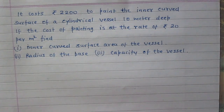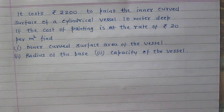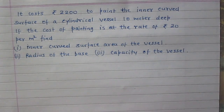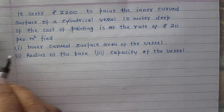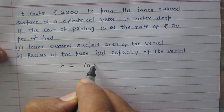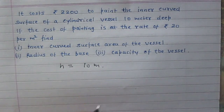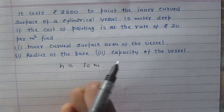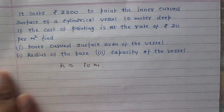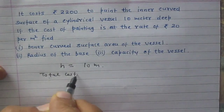It costs rupees 2200 to paint the inner curved surface of a cylindrical vessel 10 meters deep. If the cost of painting is at the rate of rupees 20 per meter square, find: number one, the inner curved surface area of the vessel; number two, the radius of the base; and number three, the capacity of the vessel. We are given a cylindrical vessel with height H = 10 meters.